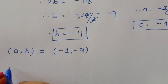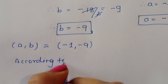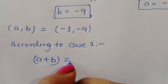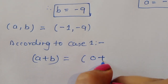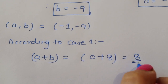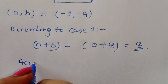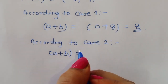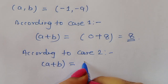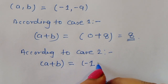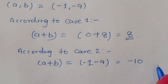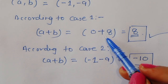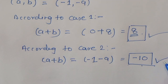Now we find a plus b for each case. According to Case 1, a plus b equals 0 plus 8, which equals 8. According to Case 2, a plus b equals minus 1 plus minus 9, which equals minus 10. So the value of a plus b is either 8 or minus 10. Thank you.